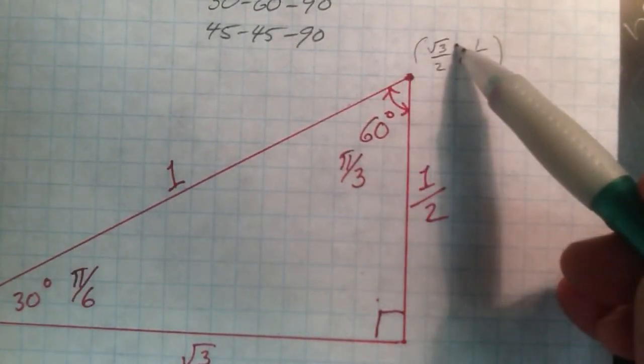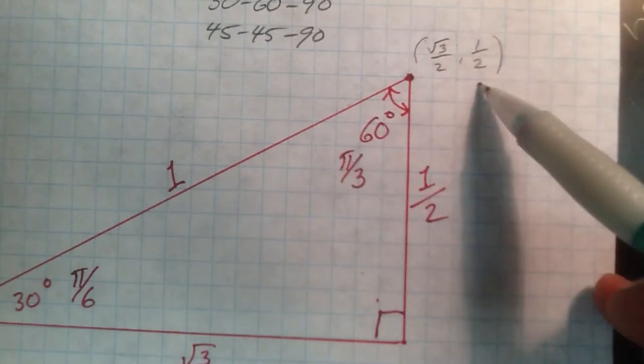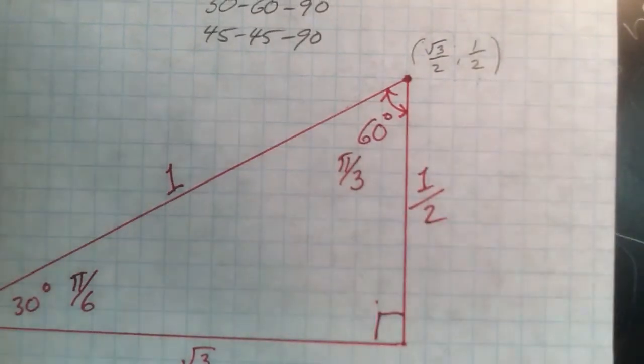this could be the side adjacent of a right triangle, this could be the side opposite of the right triangle. And I can get all my trigonometric ratios from that.